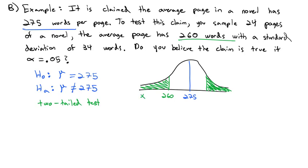We're going to calculate t-values off of the distribution. The mean is distributed as a t-distribution because we don't know the standard deviation of the population, but we know the degrees of freedom is one less than the sample size, so the degrees of freedom is 23. Let's go to our calculator to calculate the t-value and the p-value.